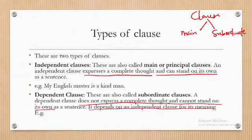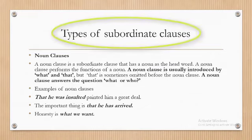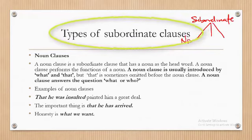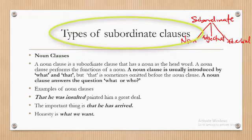The two types of clauses are main clause and subordinate clause. Under subordinate clauses, we can categorize them into three: noun clauses, adjectival clauses, and adverbial clauses. These are the three major categories of subordinate clauses.